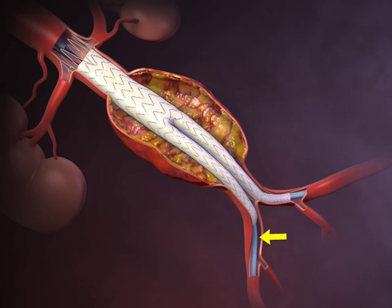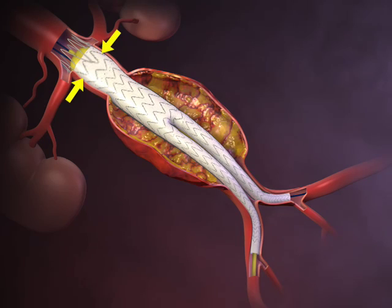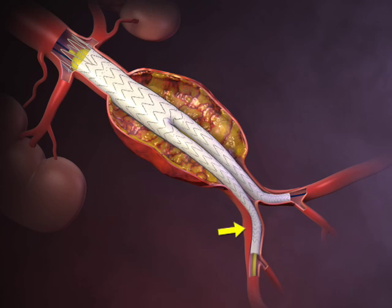The ipsilateral limb of the stent graft is deployed in similar fashion. A balloon is then introduced and used to expand all graft-to-vessel and graft-to-graft junctions in the proximal to distal direction to ensure a tight seal.